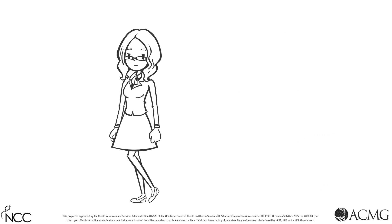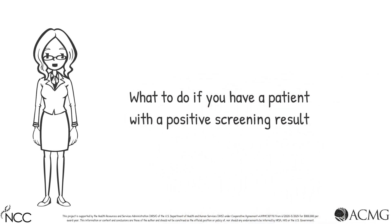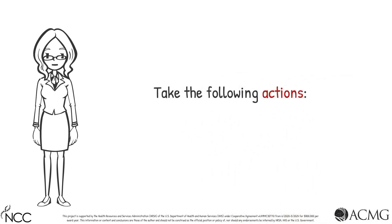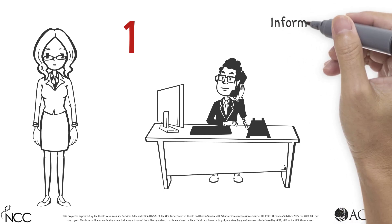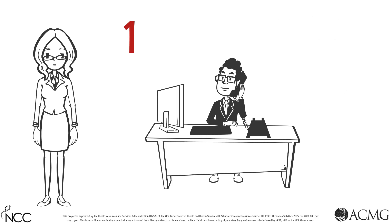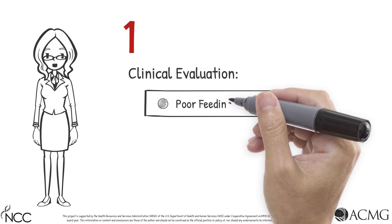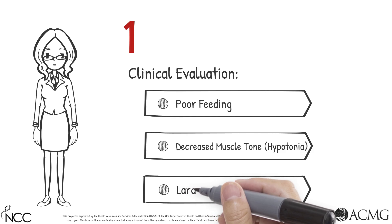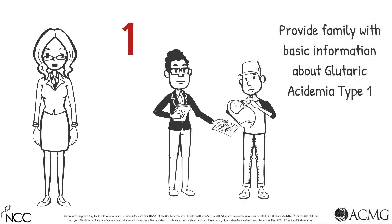If you have a patient who has screened positive for Glutaric Acidemia Type 1 during newborn screening, you will need to take the following actions. First, immediately contact the family. Inform them of the newborn screening result and that more testing is needed to determine if their child does or does not have Glutaric Acidemia Type 1. Ascertain clinical status, paying close attention to signs like poor feeding and decreased muscle tone or macrocephaly. Provide the family with basic information about Glutaric Acidemia Type 1.